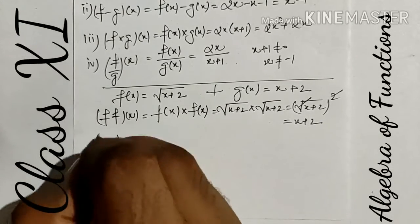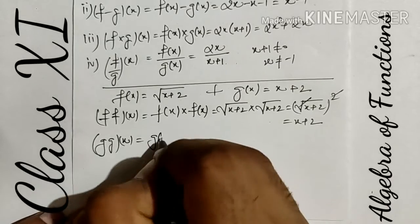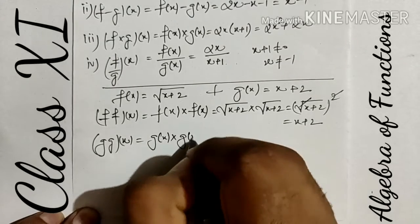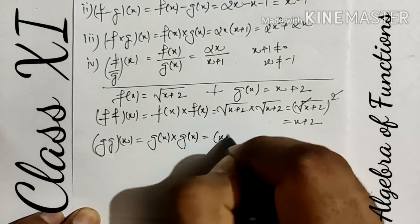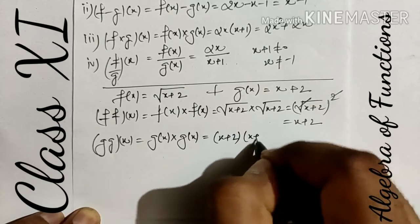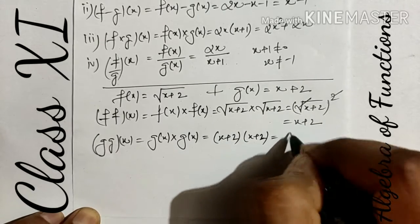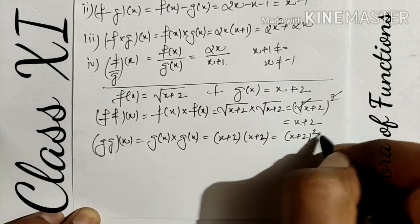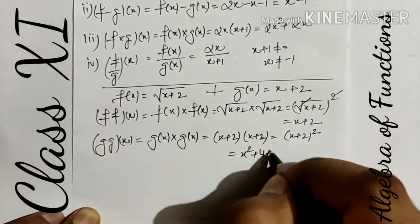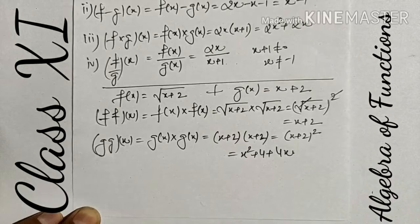Another value, g·g: we need variable x. It can be written as g(x) multiplied by g(x). So g(x) value is x+2, multiplied by x+2. It becomes (x+2)² = x²+4+4x by the identity (a+b)² = a²+b²+2ab.